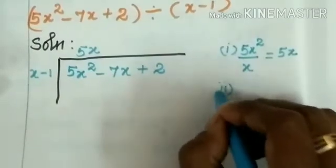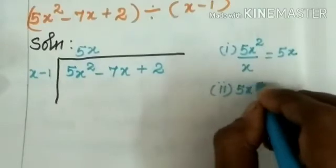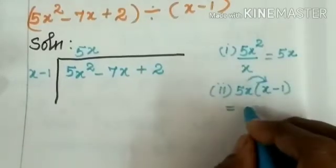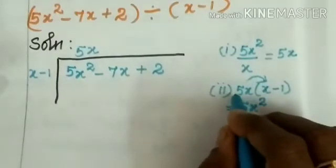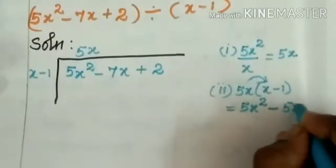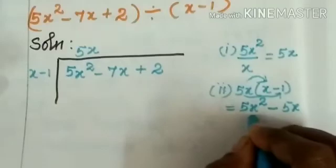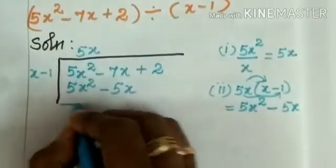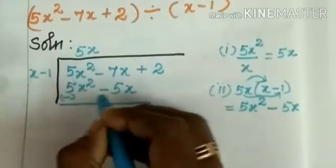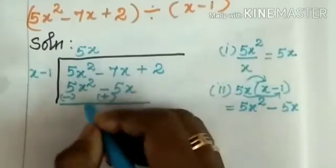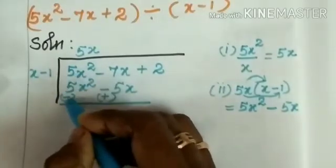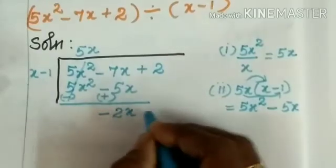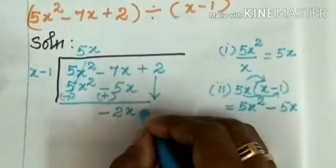In the second step, we multiply 5x by the divisor (x − 1): 5x × x = 5x², and 5x × (−1) = −5x, giving 5x² − 5x. We write this below and subtract by changing the signs: 5x² − 5x² cancels. Then −7x + 5x = −2x. Bring down the last term: +2. So the new expression is −2x + 2.